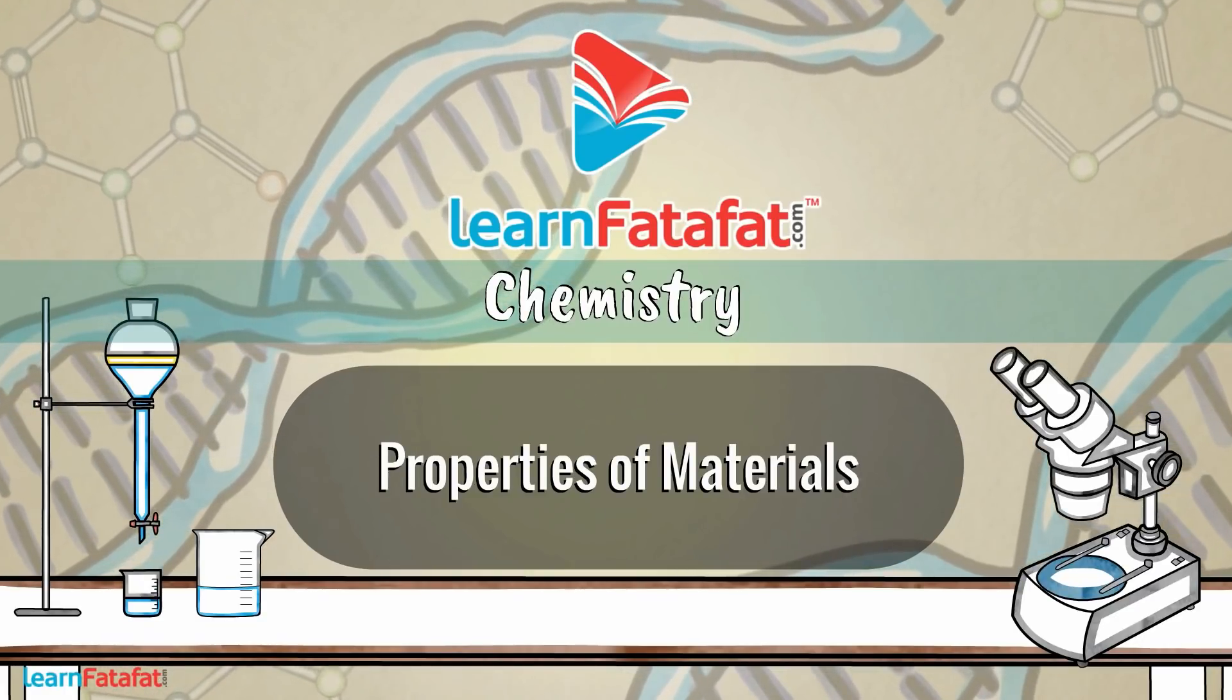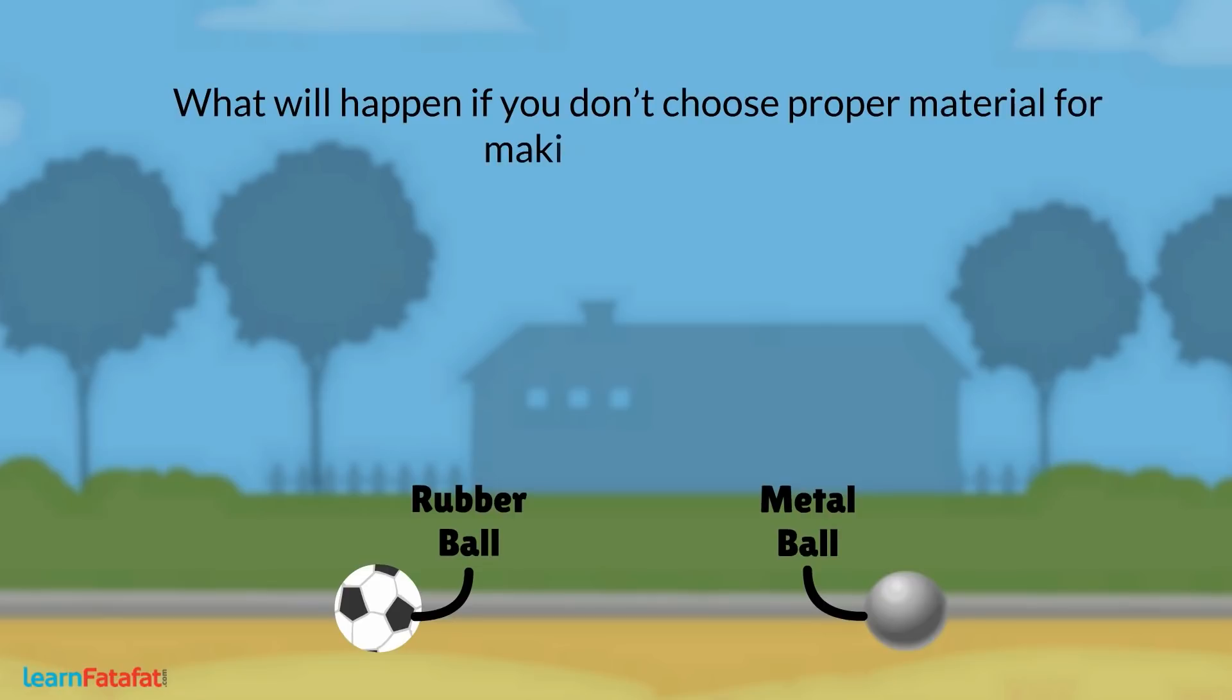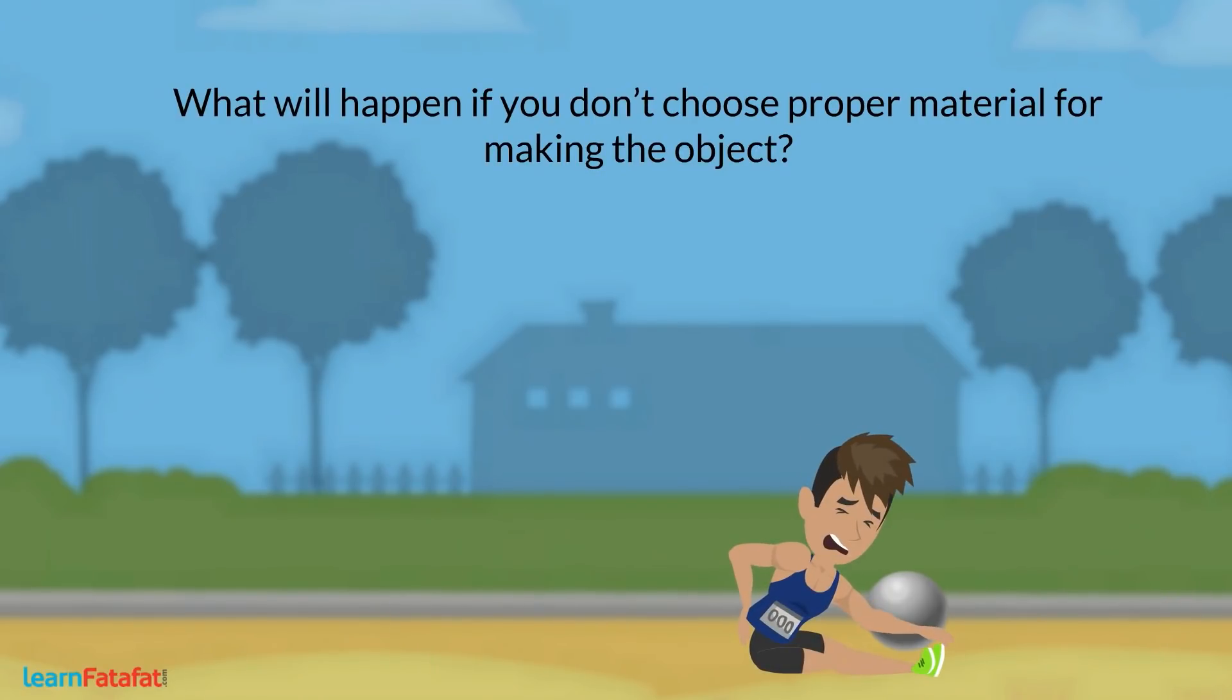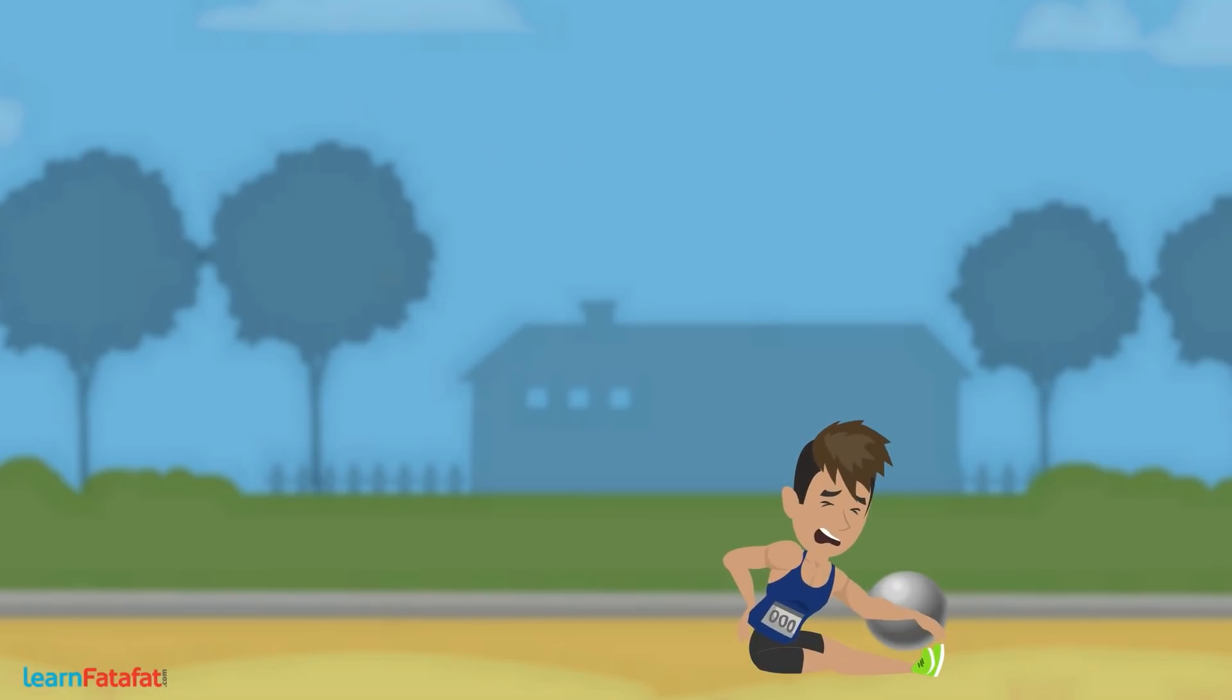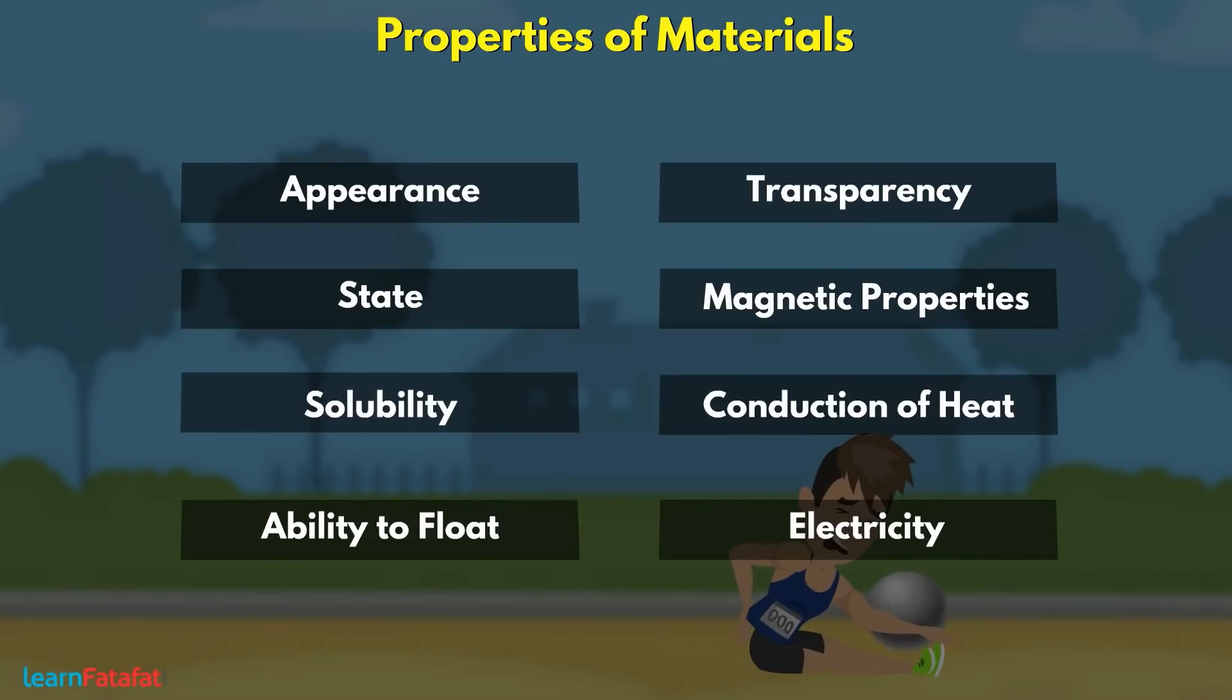Properties of Materials. For solving our need, we make objects. These objects are formed from materials. What will happen if you don't choose proper material for making an object? Definitely, you don't want to be in such a situation. In order to make objects for specific need, we must understand the properties of materials. We will discuss these properties in this video.